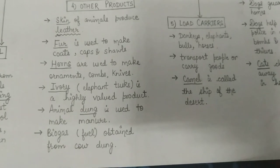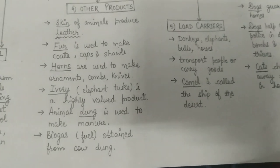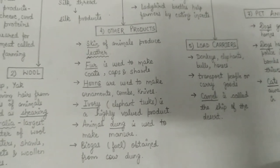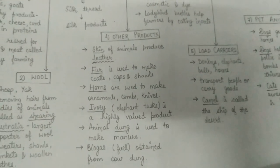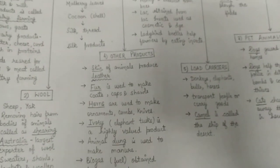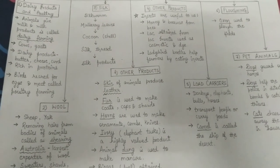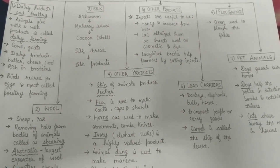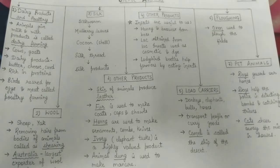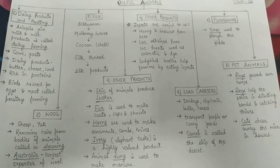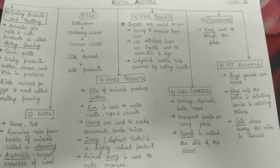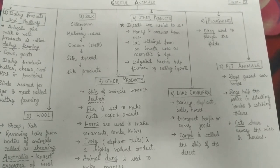These are the products that we get from animals — see how animals are so useful to us. We must take care of them and not hunt them out of greed. The government has taken many steps to save animals from hunting. In the next class, we will discuss the other uses of animals. That's all for today. Thank you.